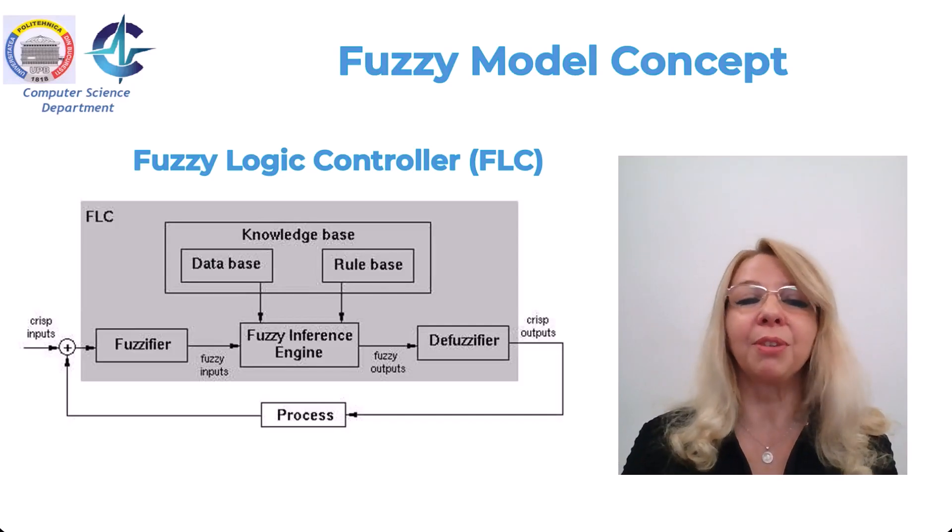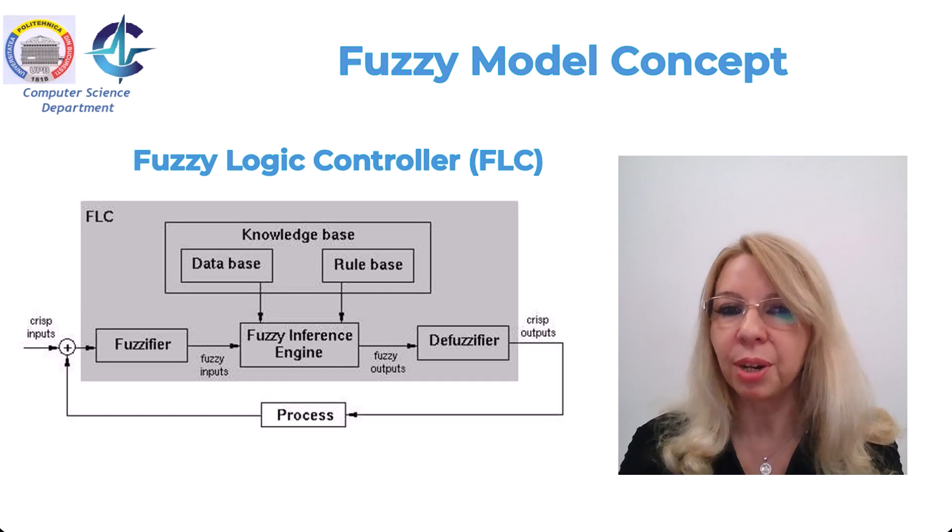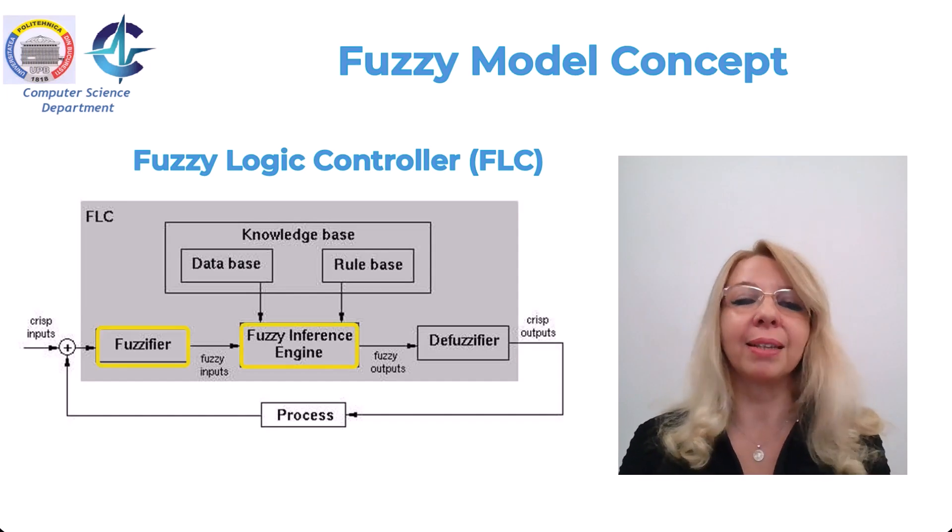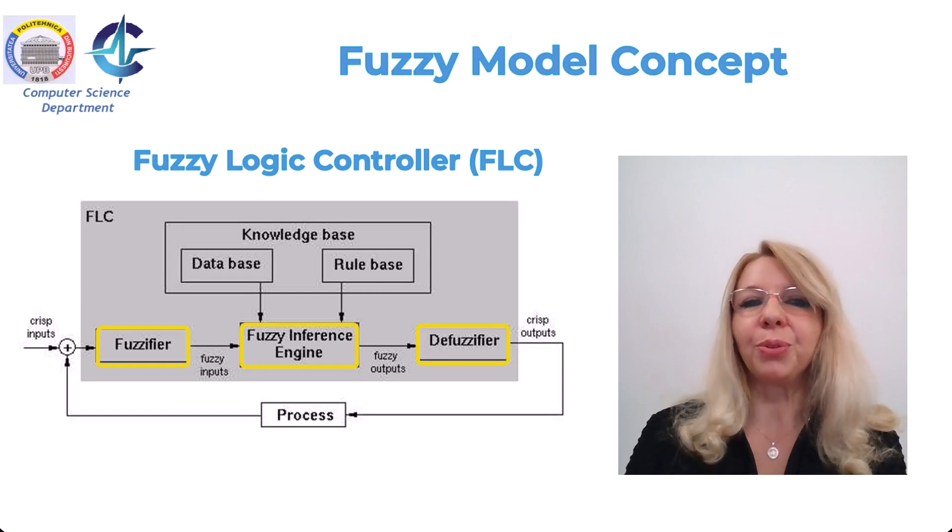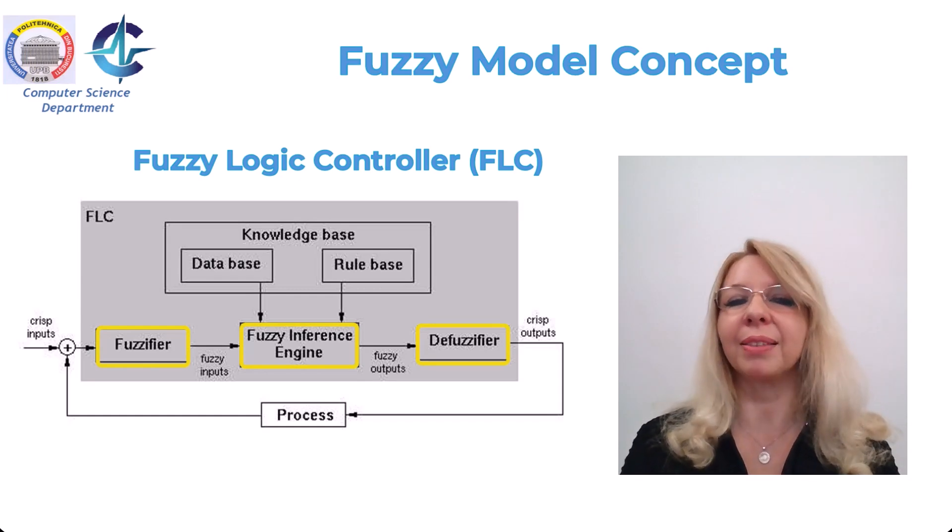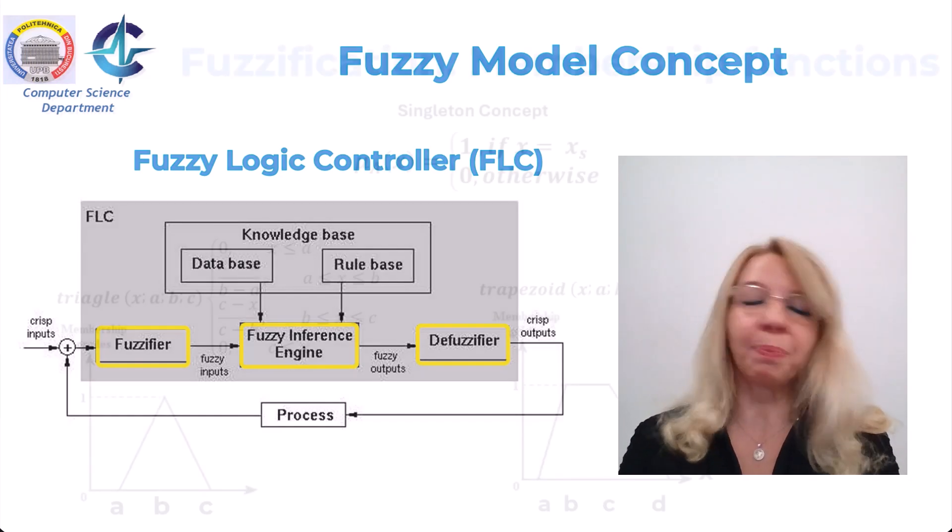A fuzzy controller consists of three main sections as can be observed: the fuzzifier, the fuzzy inference engine, and the defuzzification. In the picture, you see the whole general scheme of this fuzzy controller. Let's take it one by one.